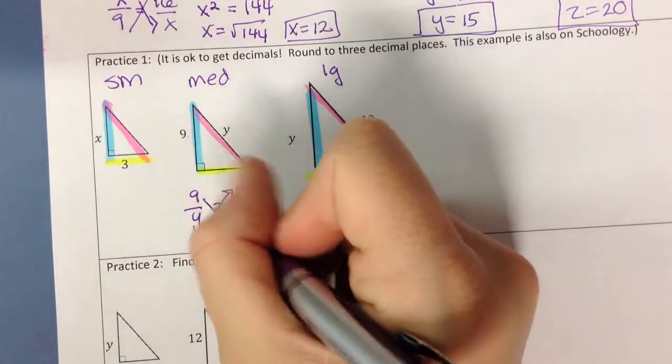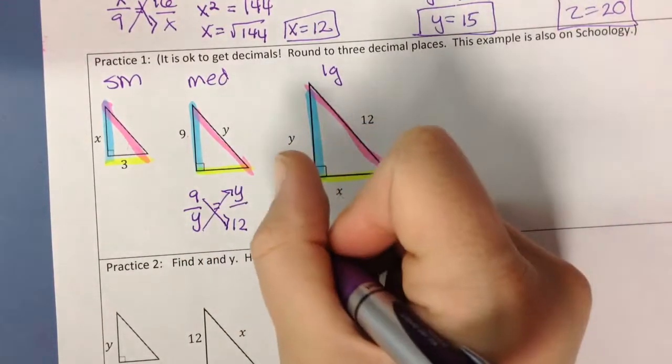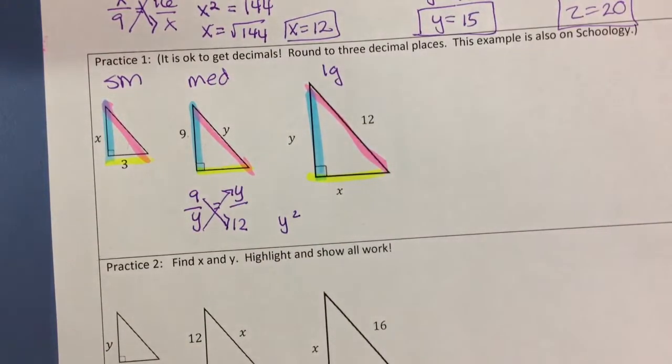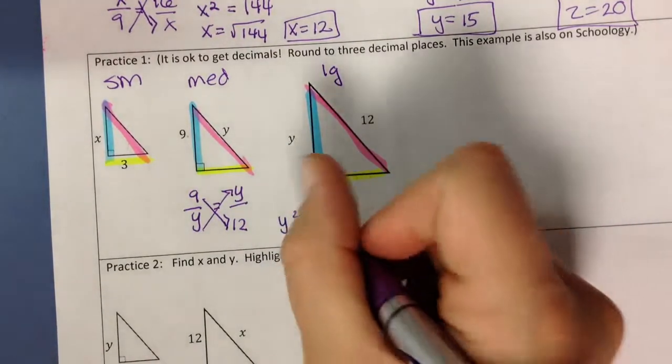So now I'm going to cross multiply. Y times y is y squared. And 12 times 9 is 108.